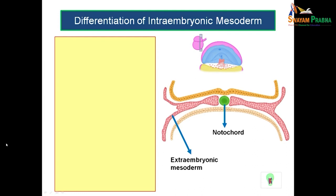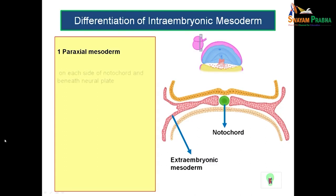Let us see the differentiation of intraembryonic mesoderm. We have already seen that a germ disc consists of three layers — the ectoderm, endoderm, and intraembryonic mesoderm. The intraembryonic mesoderm is differentiated as: first, the paraxial mesoderm, which is the mesoderm lying just next to the notochord. Since the notochord forms the axis of the embryo, the mesoderm on each side is called paraxial mesoderm.